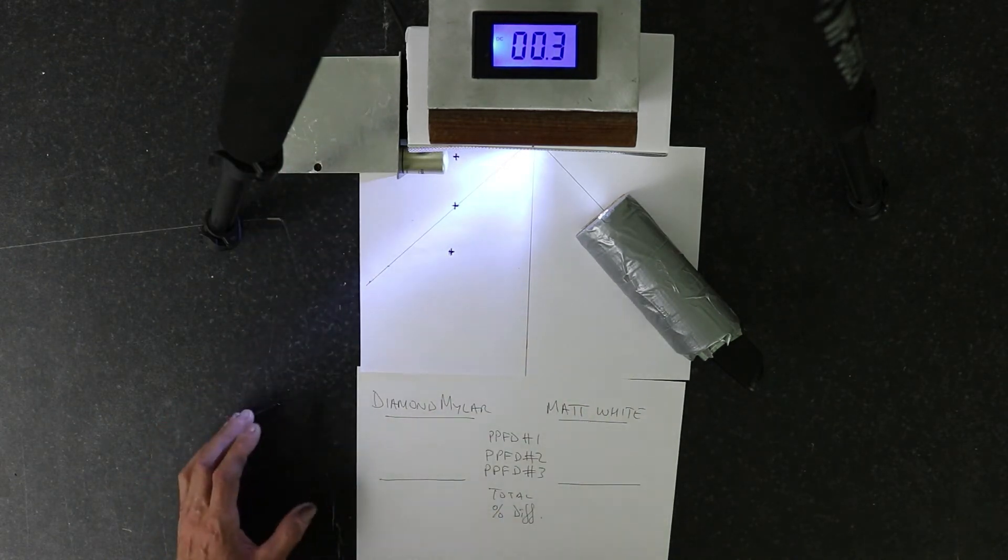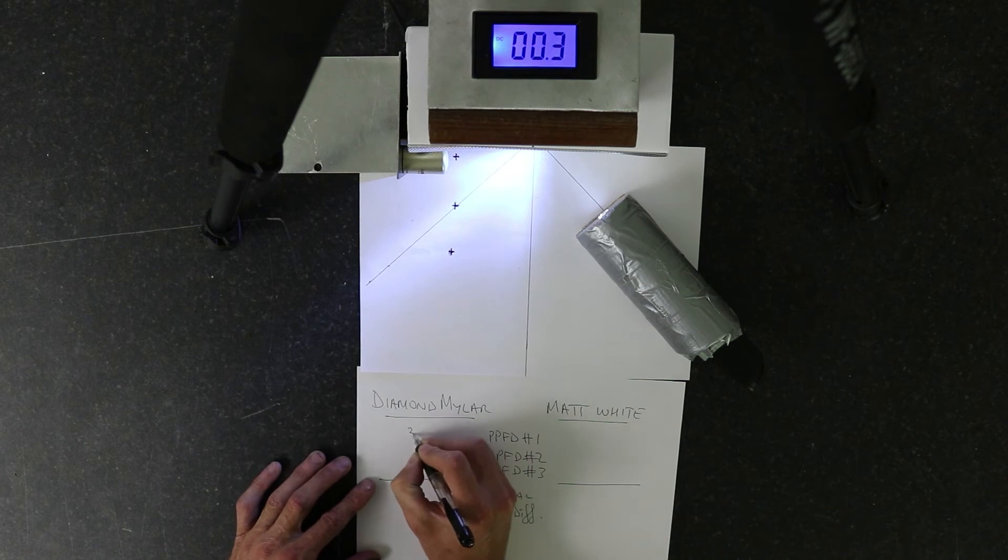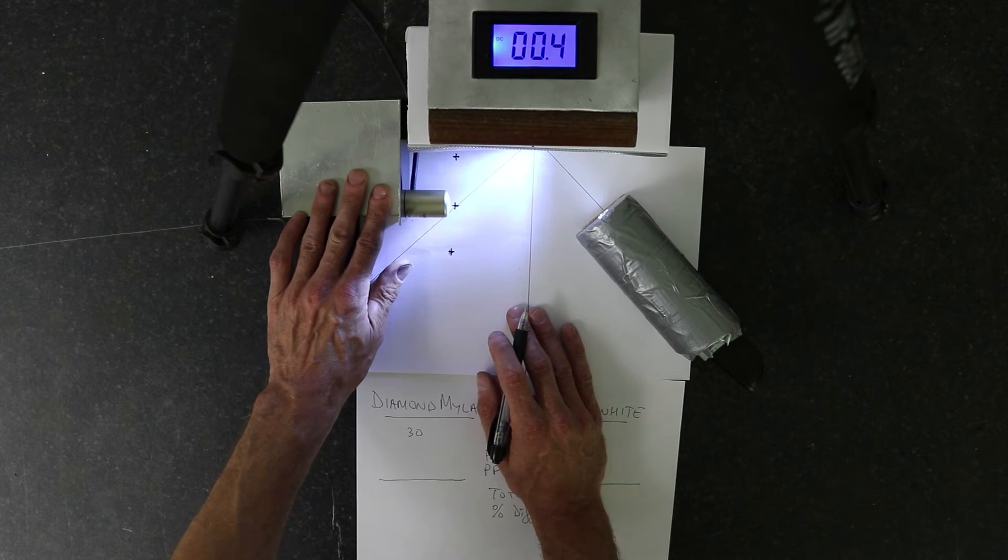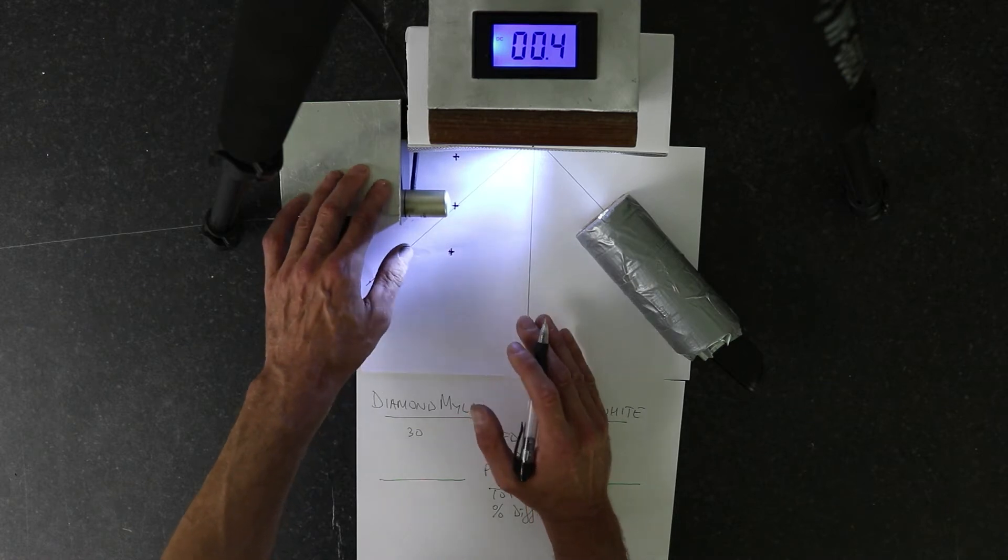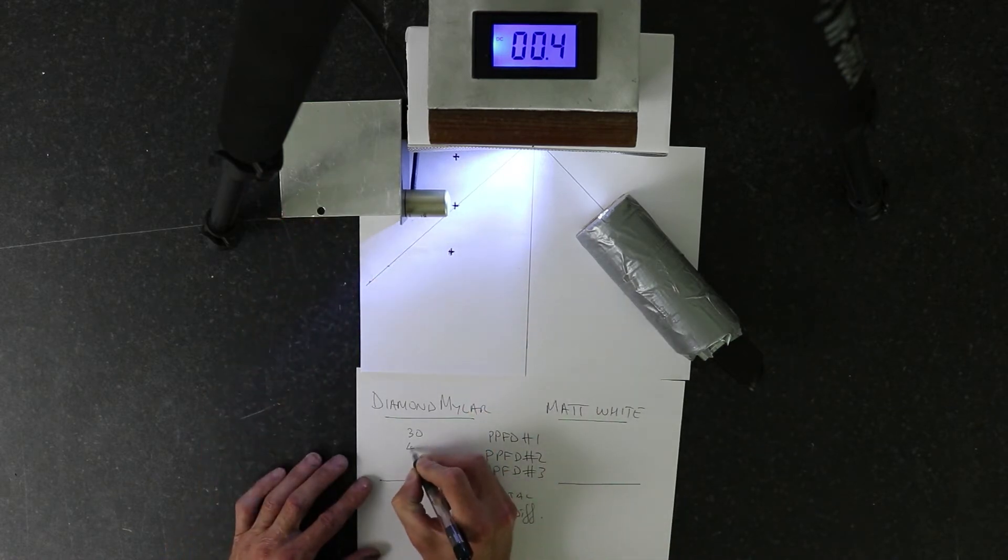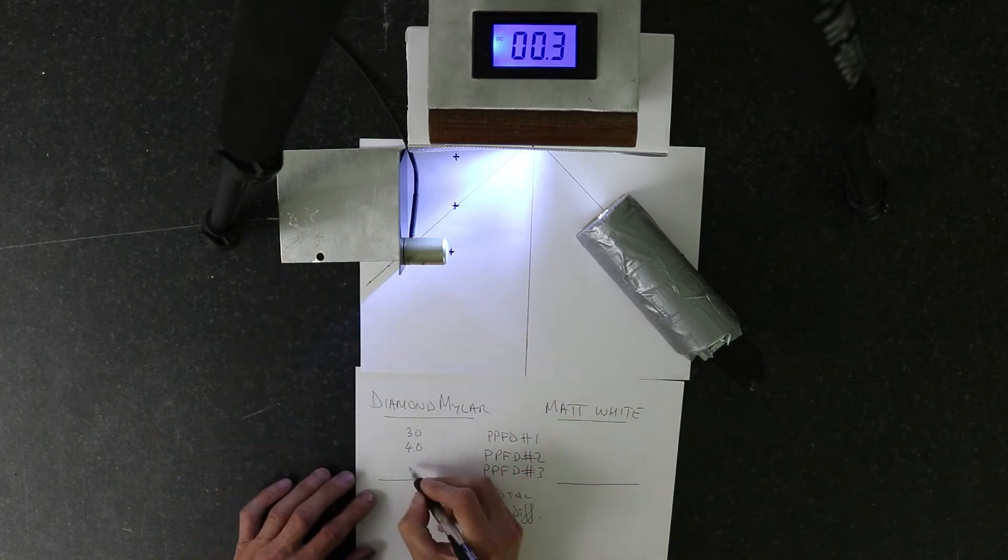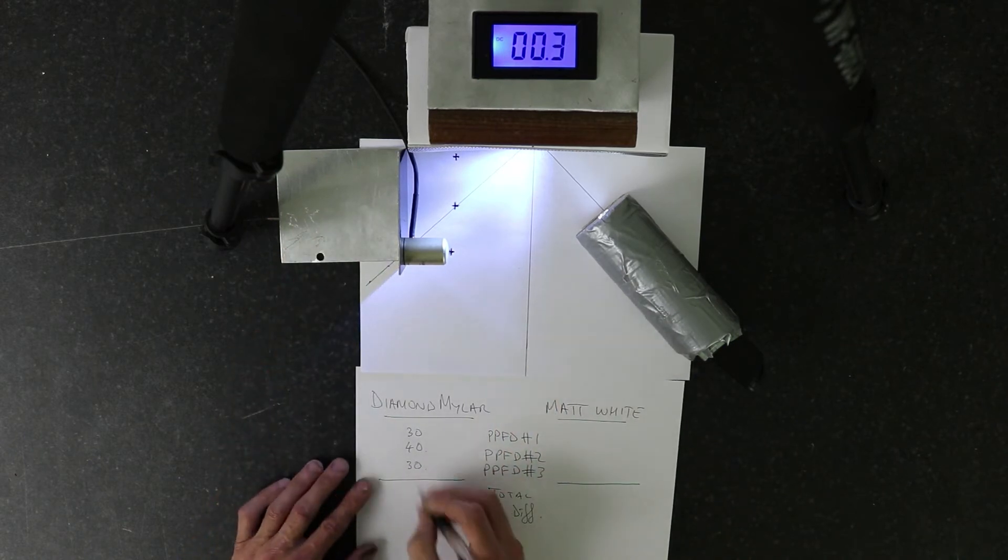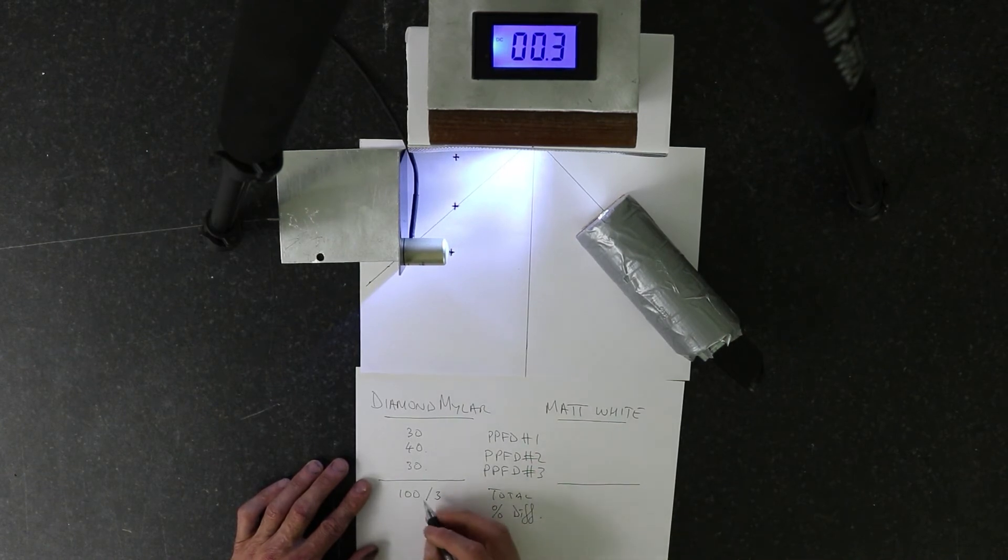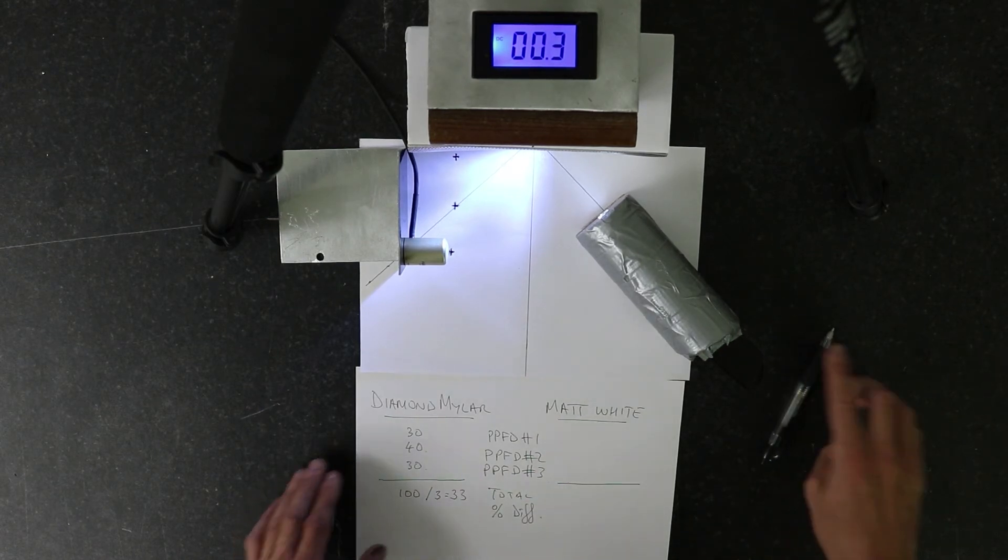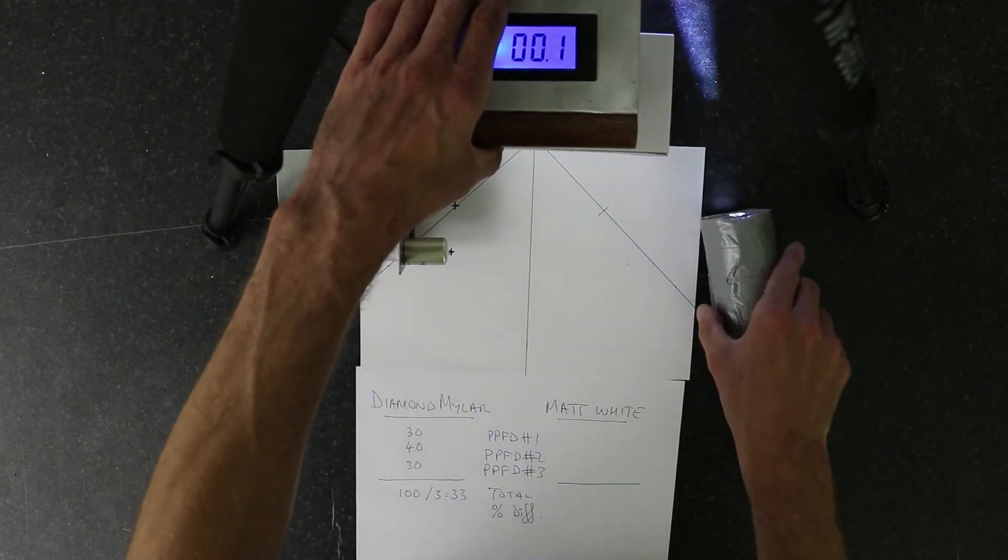So our first measurement for the diamond mylar is 30. This is in micromoles per meter squared per second. It's a PPFD measurement. The second one is 40, and the third one is 30. So total is 100, divided by 3 to get your average, which is 33.3. So let's flip the sample over.